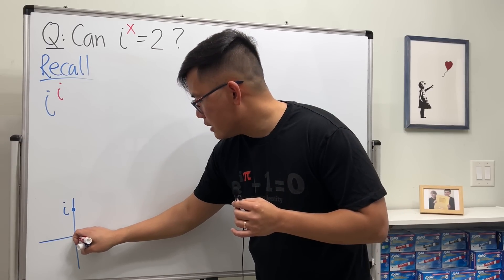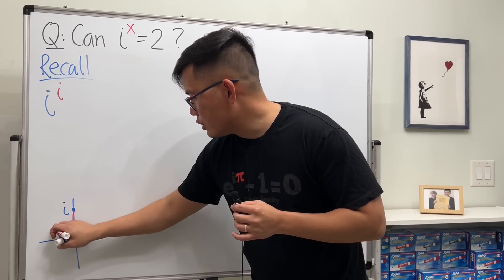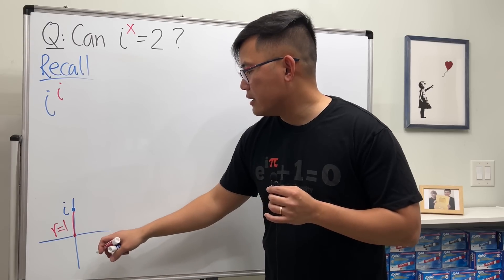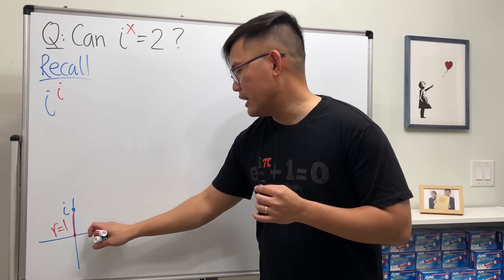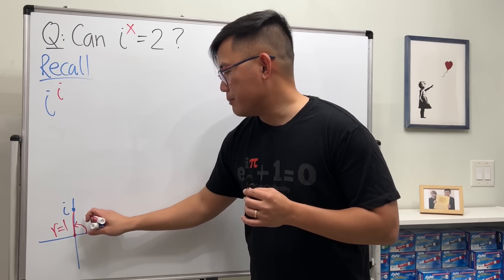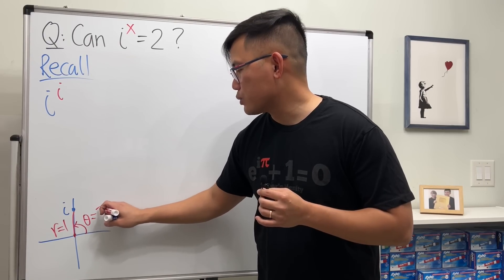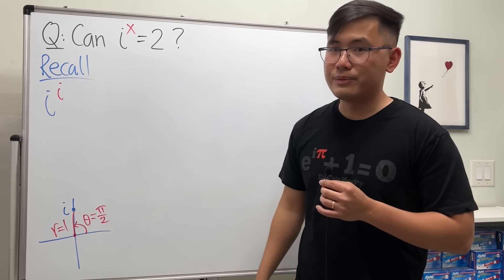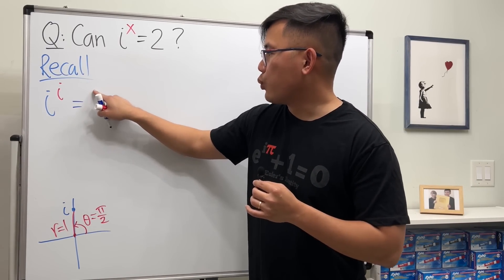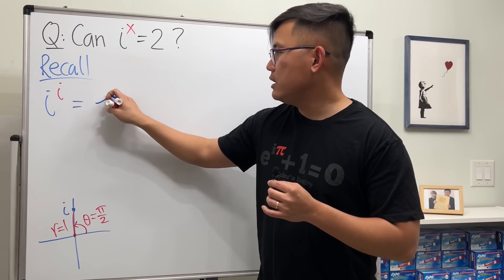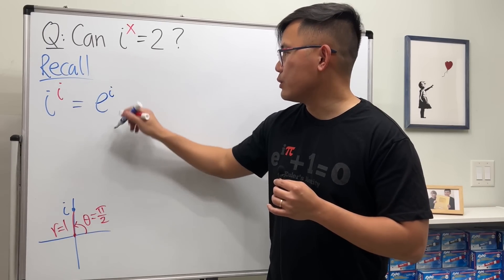Put this into the polar form means that we have to find re^(iθ). r is the distance from here to here, it's just one unit up, and then e is just e, i is just i. θ is the angle from here to here, and please don't say 90 degrees. Say π over 2. So we can put i as e^(iπ/2).